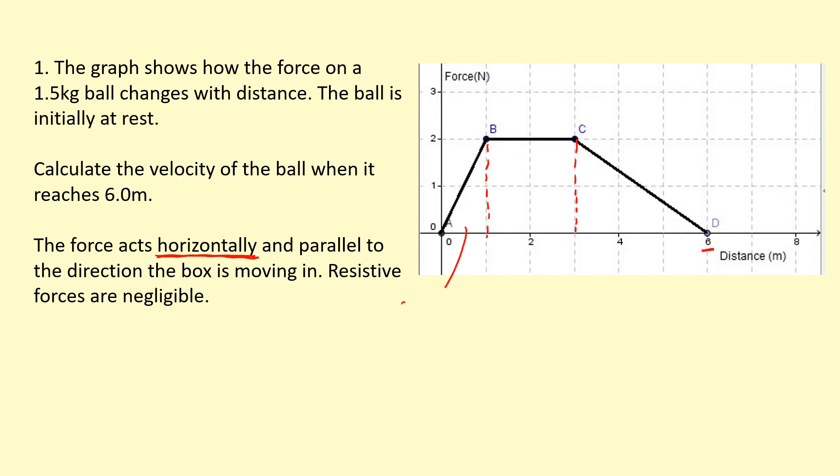This one will be 2 times 1 divided by 2, so that's just 1 joule there. This one here is a square, so it's just 2 times 2 there, so that's 4 joules. And the final one here is going to be, let's see, we've got 2 times 3 over 2, so that's 3 joules. So in total, 1 plus 4 plus 3 gives us 8 joules in total.